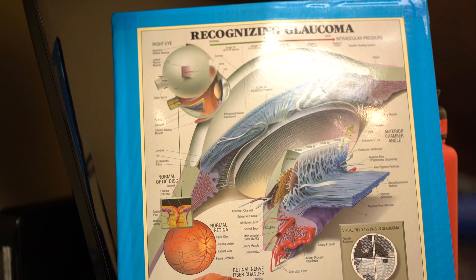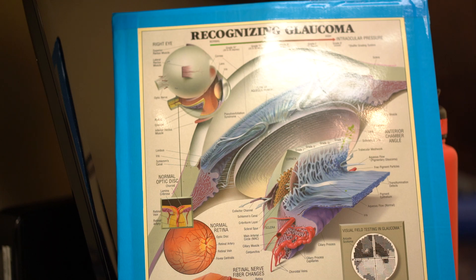Today we're going to be talking about glaucoma. Glaucoma is one of the top three reasons why people go blind and lose their eyesight. When we have eye exams, that is one of the main things that we look for. We want to screen everybody to make sure they don't have it, because it's what we call the silent thief of sight.